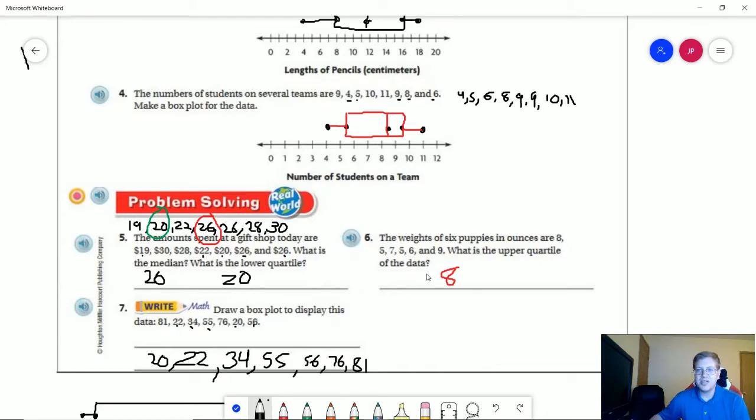Number six, our upper quartile is going to be 8, because that is going to be the number that falls between 7 and 9. So we had 5, 5, 6 would be our median, 7 and 9 would be our upper quartile. The upper quartile would be the center of that, which would be 8.